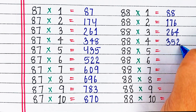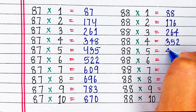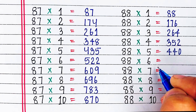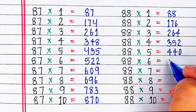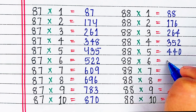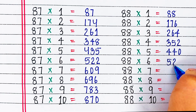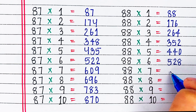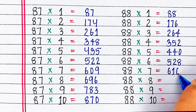88 1s are 88, 88 2s are 176, 88 3s are 264, 88 4s are 352, 88 5s are 440.